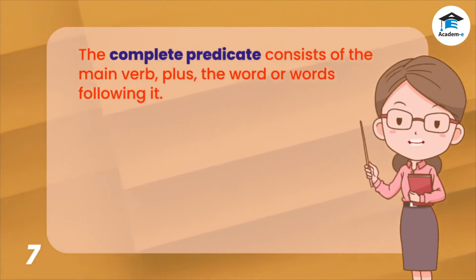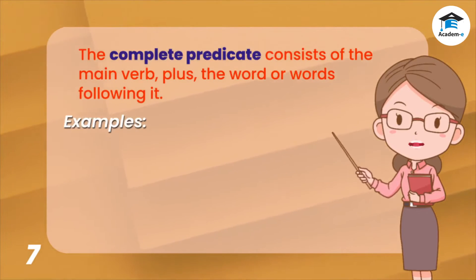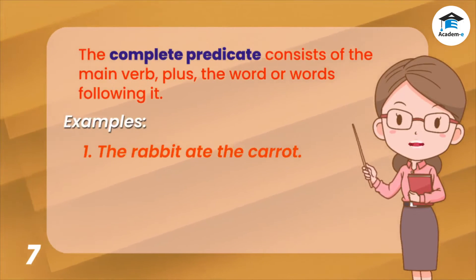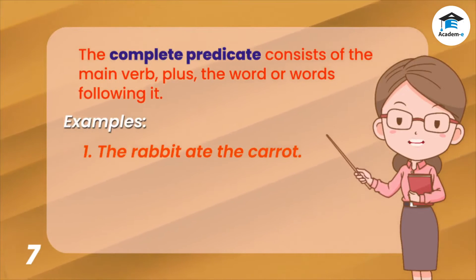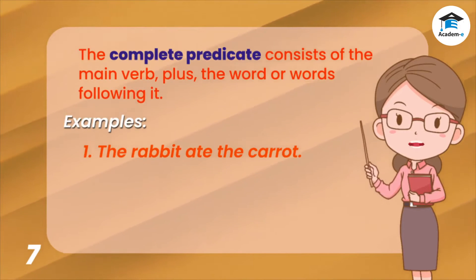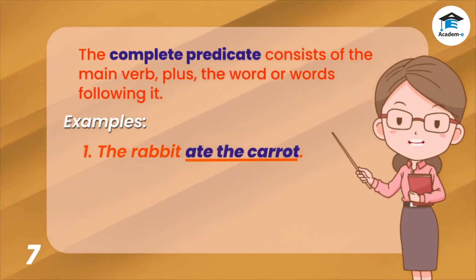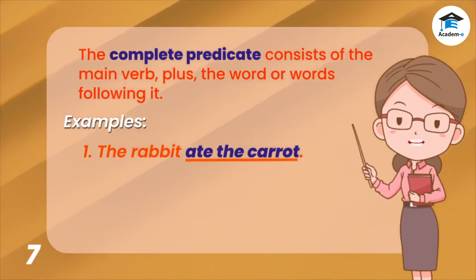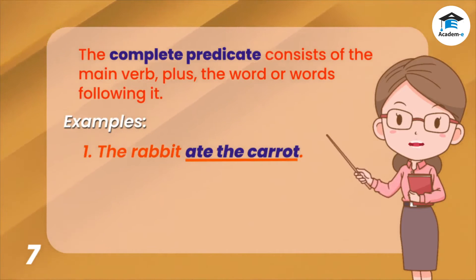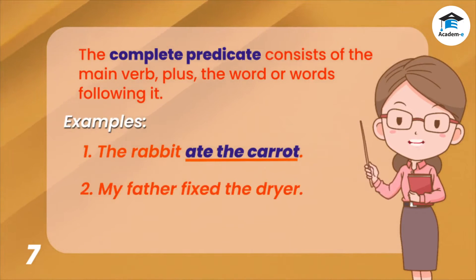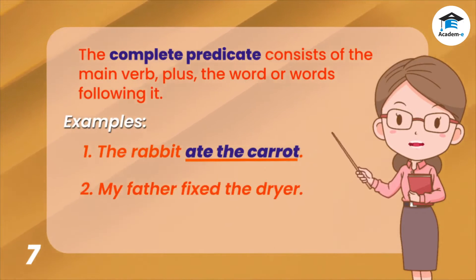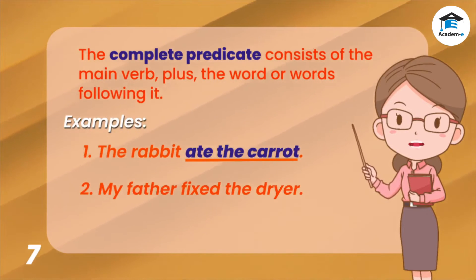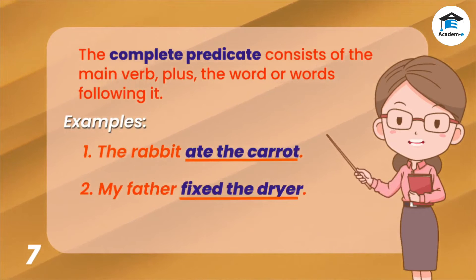The complete predicate consists of the main verb plus the word or words following it. Let's analyze these examples. One: 'The rabbit ate the carrot.' In this sentence, the complete predicate is 'ate the carrot' — it has the main verb and the words following it. Two: 'My father fixed the dryer.' In this sentence, the complete predicate is 'fixed the dryer.'